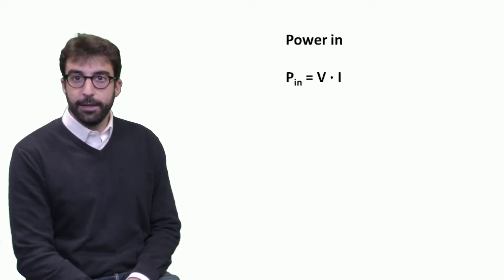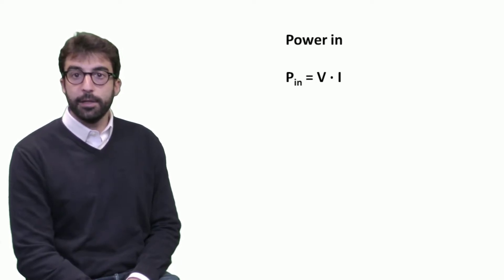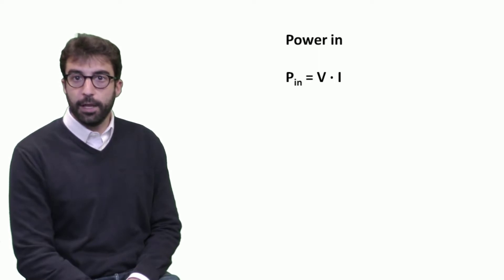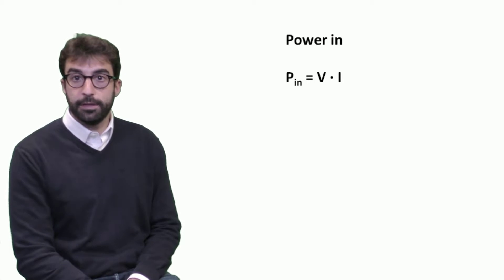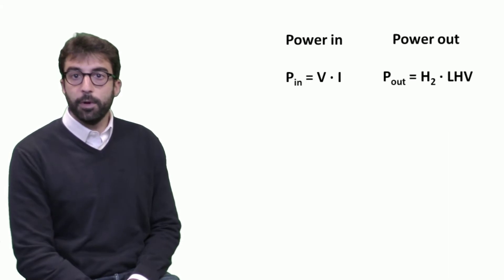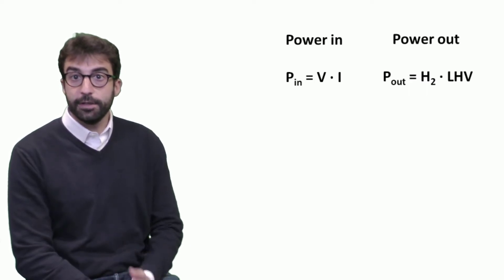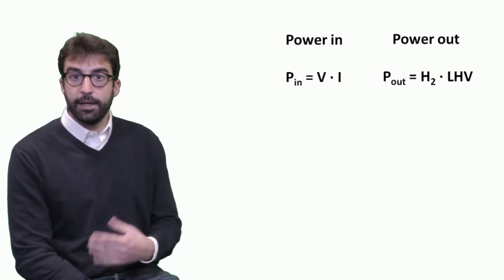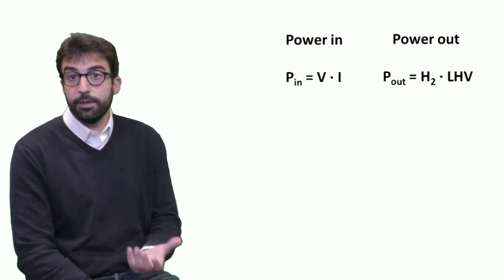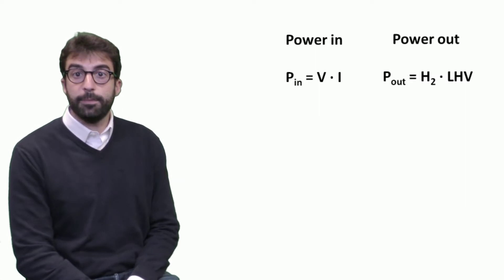What is exactly the energy equilibrium of the unit? We have an inlet power that is electrical energy, calculated as electrical power — that is voltage multiplied by current. For the outlet, the main product — the only product — is chemical energy, which is the energy inside hydrogen. It can be calculated as the hydrogen flow rate multiplied by the lower heating value of hydrogen.